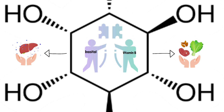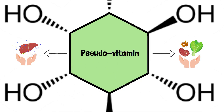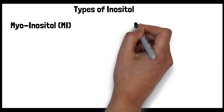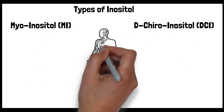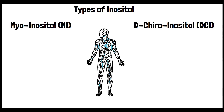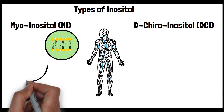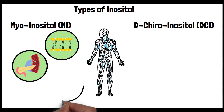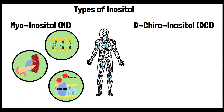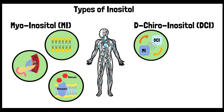It is better described as a pseudovitamin or a vitamin-like substance. There are several forms of inositol, each differing slightly in the arrangement of its hydroxyl groups. The most notable types include myoinositol (MI) and d-chiroinositol (DCI). MI is the most common form found in the human body and food sources, involved in cell membrane formation, insulin signal transduction, and is a precursor to various signaling molecules. DCI is produced from myoinositol via an insulin-dependent process.